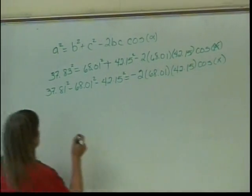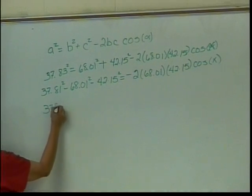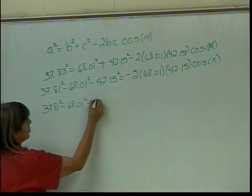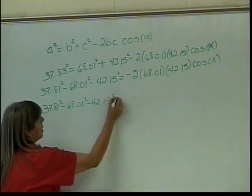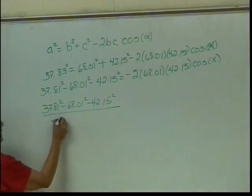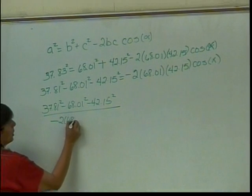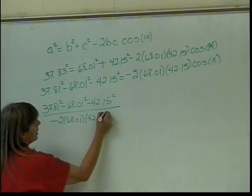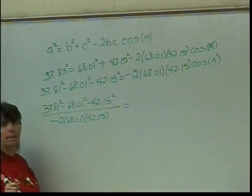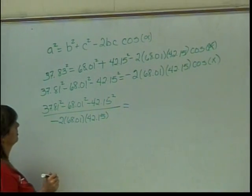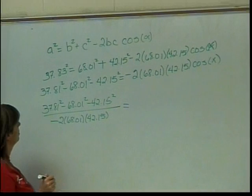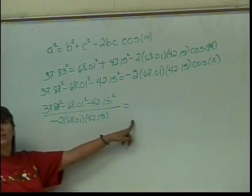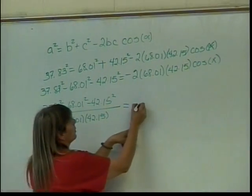So if I divide by all of that stuff, 37.81 squared minus 68.01 squared minus 42.15 squared, all divided by negative 2 times 68.01 times 42.15. And what's that going to be equal to? Cosine of x.